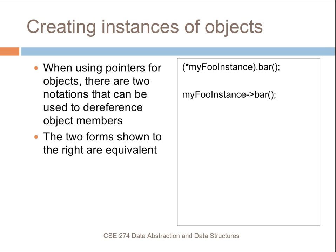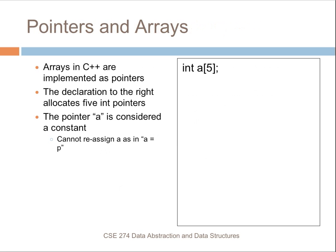When using pointers for objects, there are two ways to reference object members: you can dereference the pointer first and then refer to the method, or you can use the arrow notation. Both of these forms are equivalent.